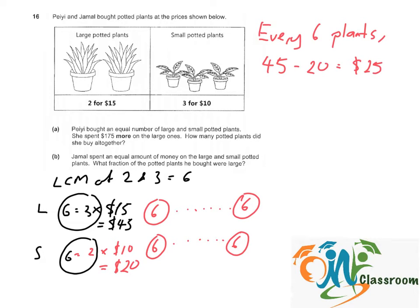Now the price difference for the total number of plants is $175. So we take $175 divided by $25. We know that she bought 7 sets of 6 plants each.